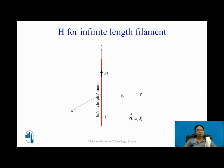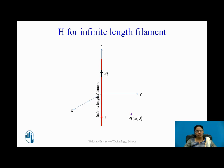Let us assume a small section of the filament having length DL bar. Because when the filament is of infinite length, I cannot find out H bar instantaneously. I need to find out small section DH bar — the magnetic field intensity for this small section — and then integrate for all sections to get H bar for the infinite length filament.